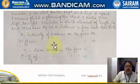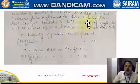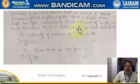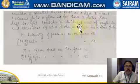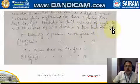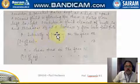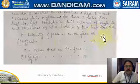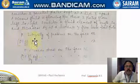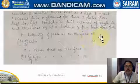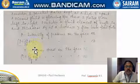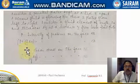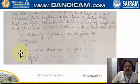Consider two parallel plates kept at a distance t apart. A viscous fluid is flowing between these two plates from left to right. Consider a fluid element of length delta x and thickness dy at a distance y from the lower fixed plate. Let P be the intensity of pressure on face AB, and P plus (∂P/∂x)dx is the intensity of pressure on face CD. Tau is the shear stress on face BC.